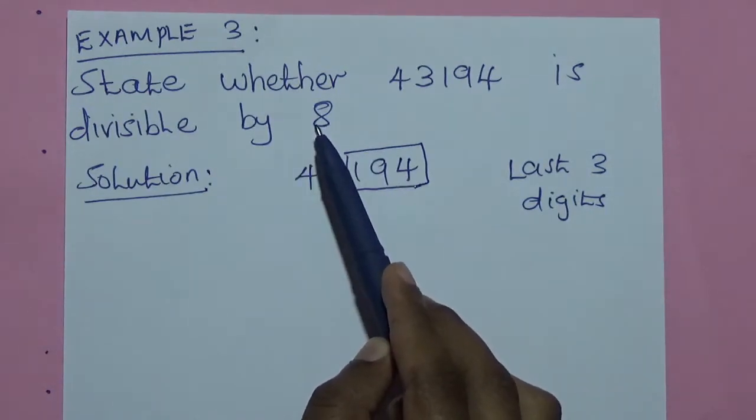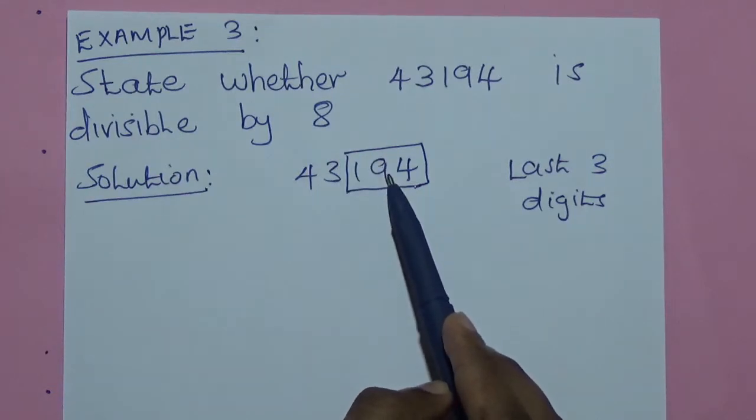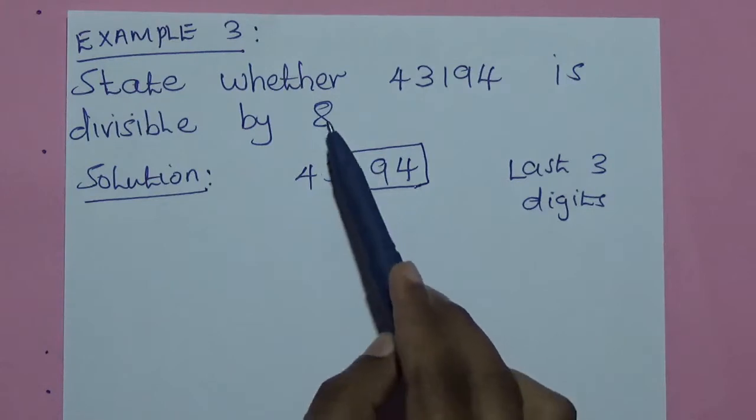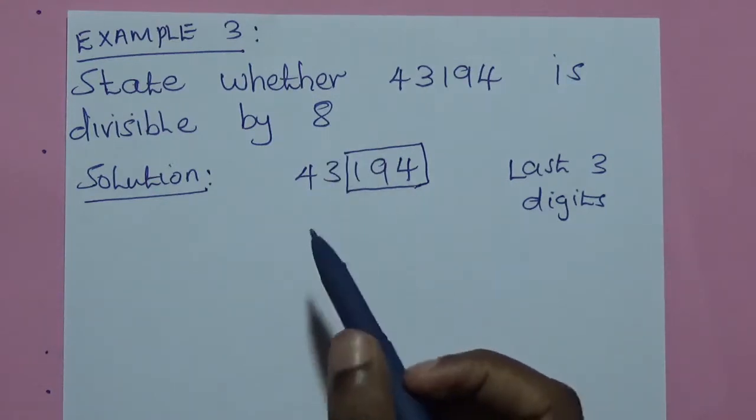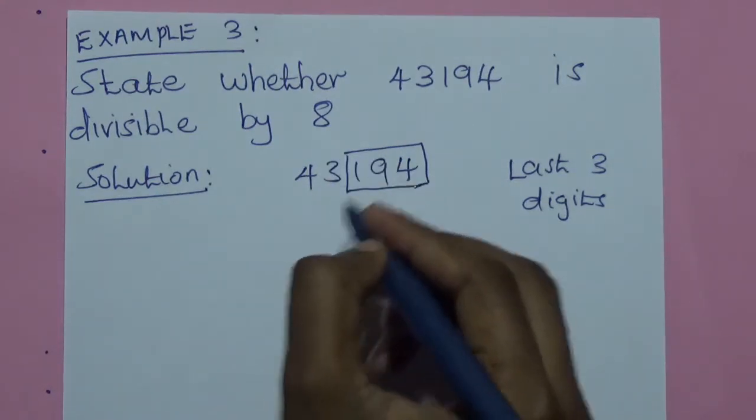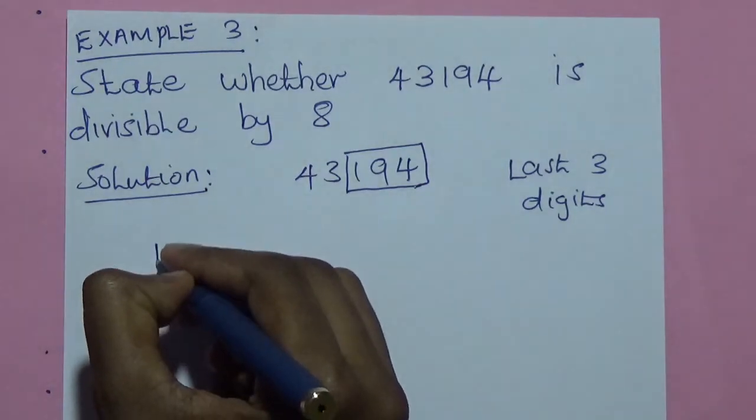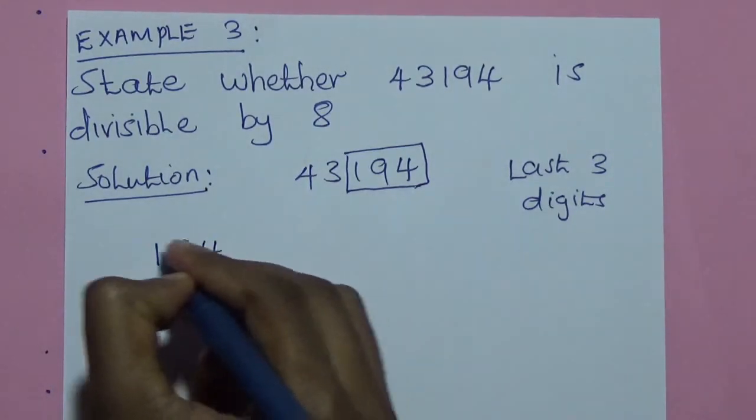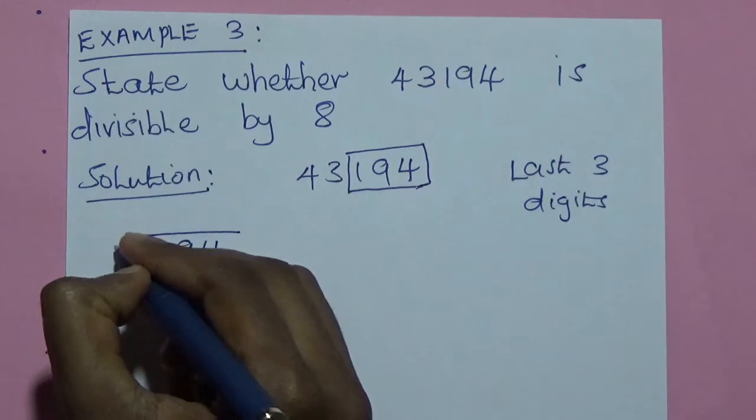And as we have been saying, if this number will not have a remainder when divided by 8, then that number is divisible by 8. So, it will be 194. We divide by 8.